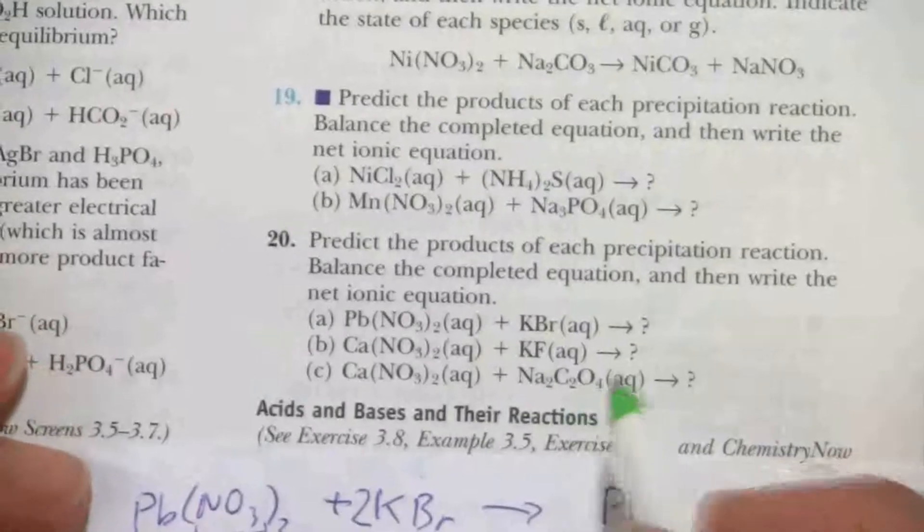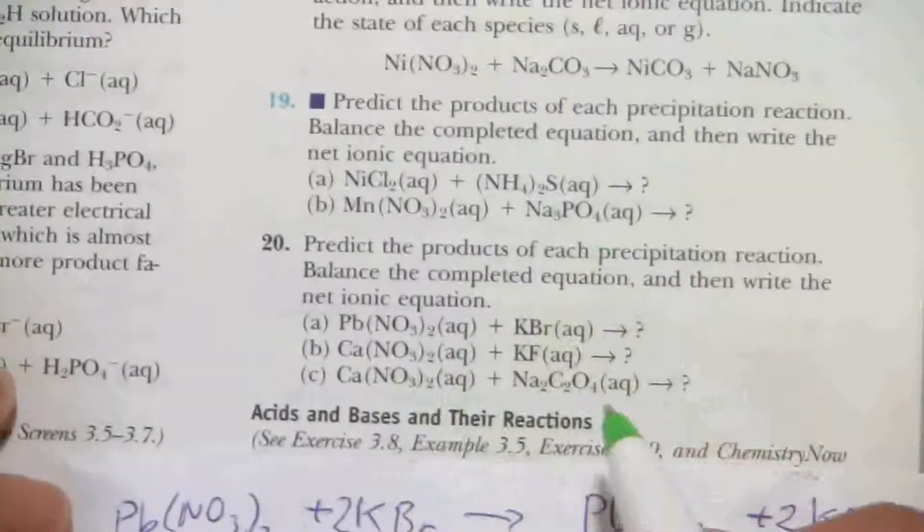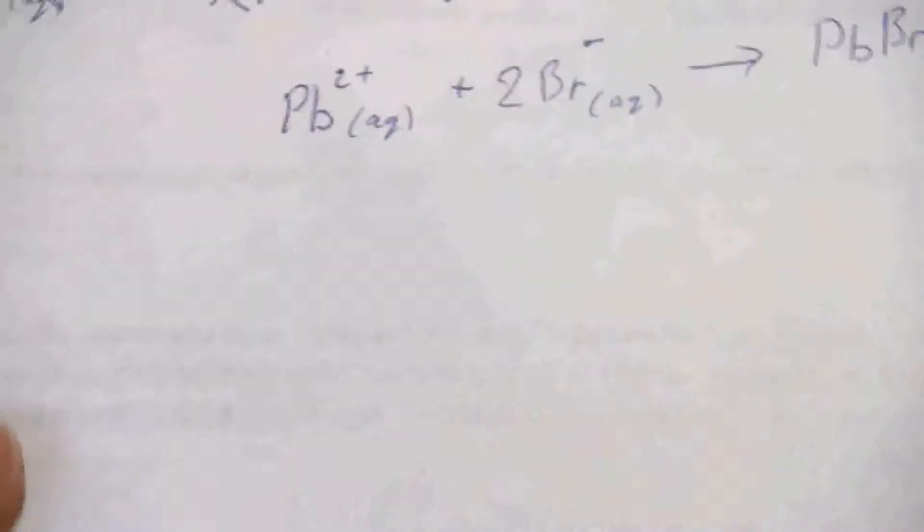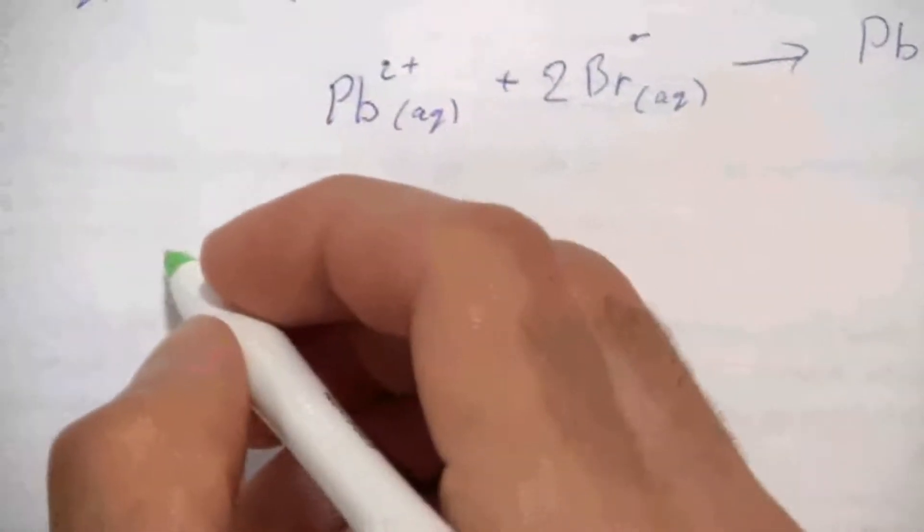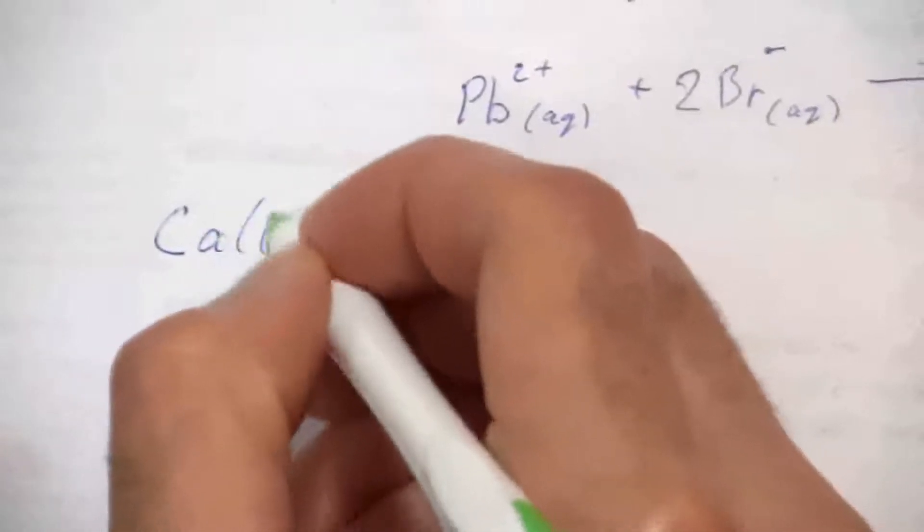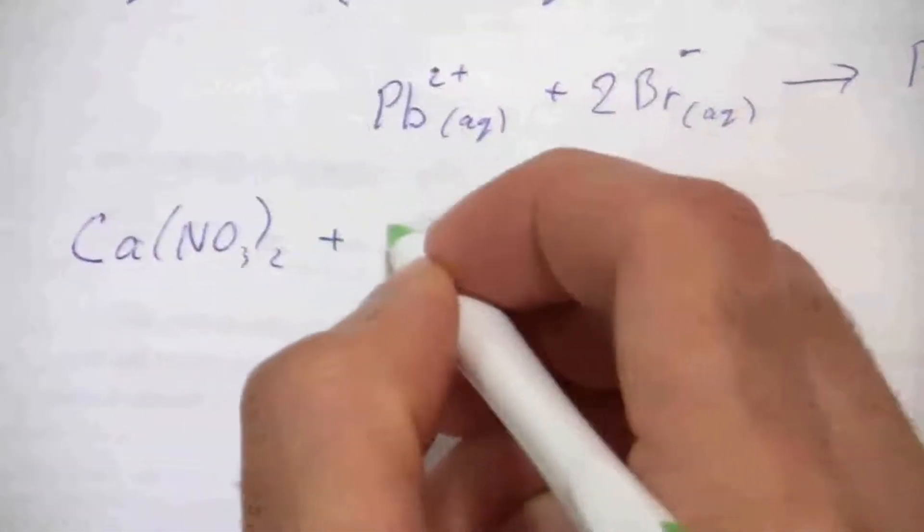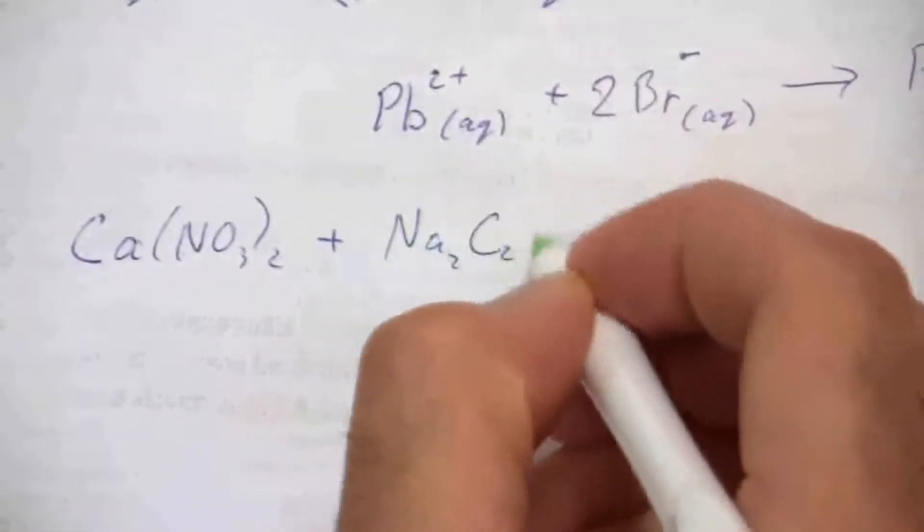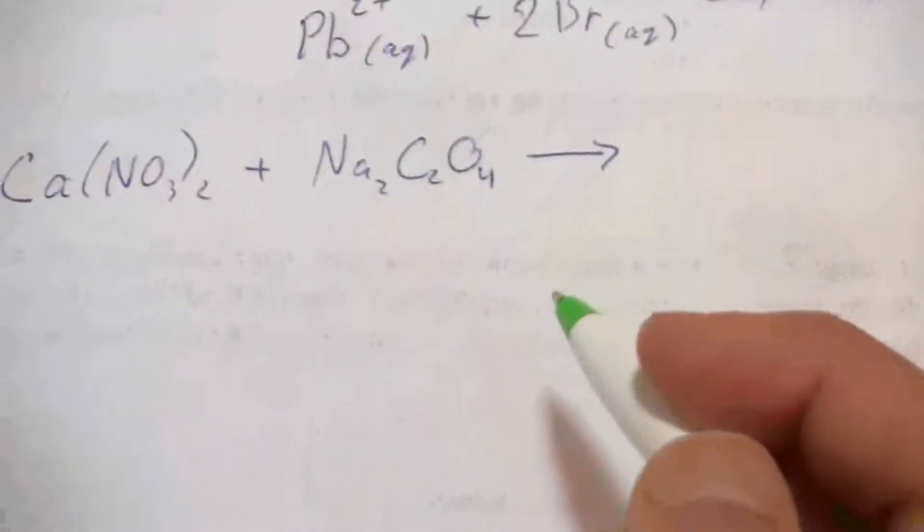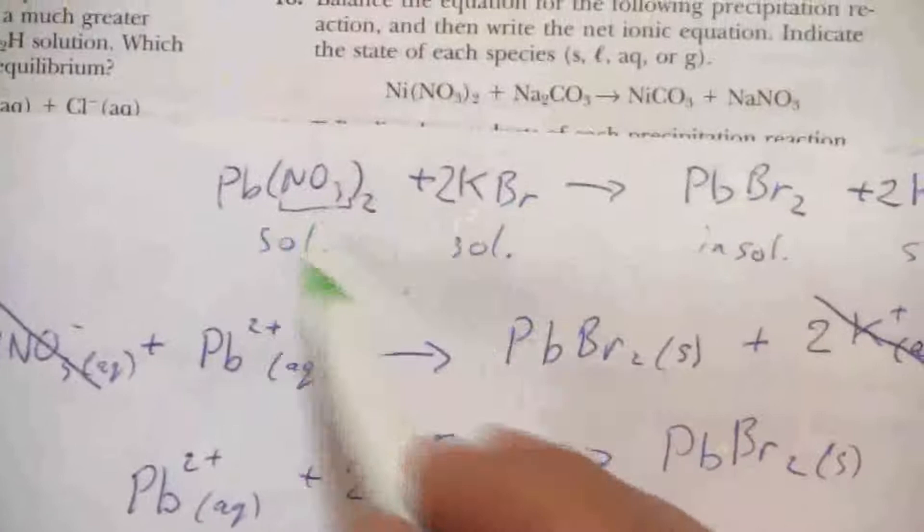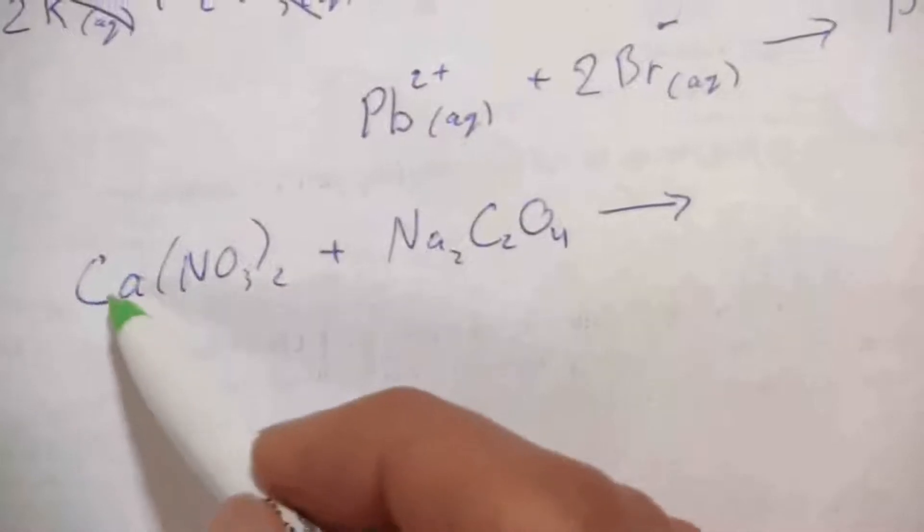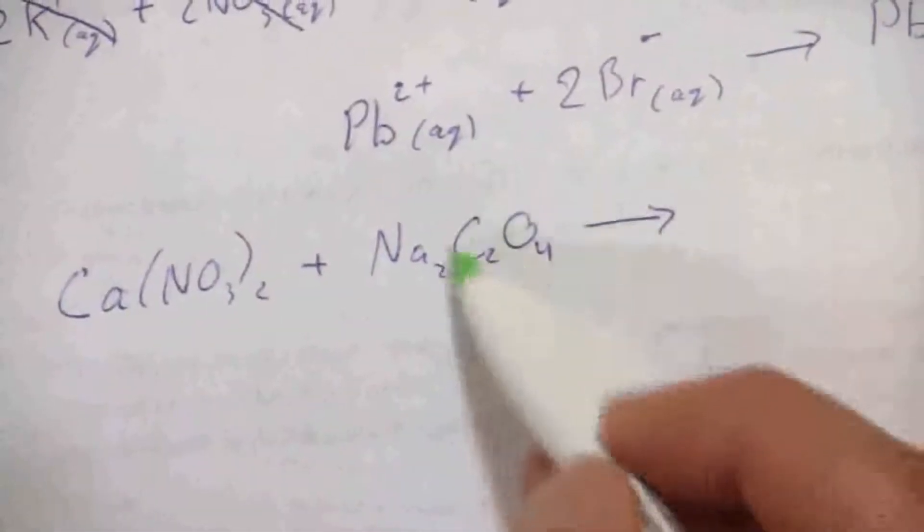That will help me in predicting my products here. So let me just write this out: calcium nitrate plus sodium oxalate C2O4 produces what's going to happen. Same thing just like we did before, I'm swapping the ion pairs. The positive ion, the cation from the calcium nitrate, goes with the anion, that oxalate ion over here.